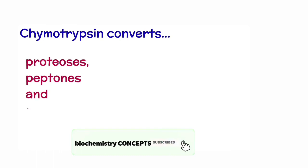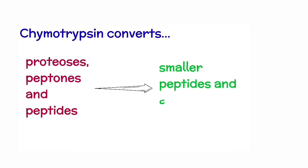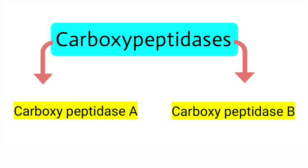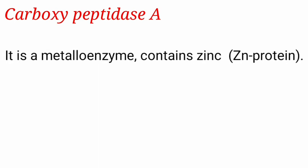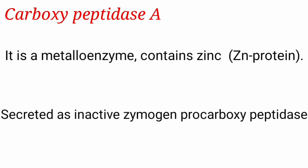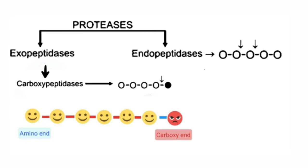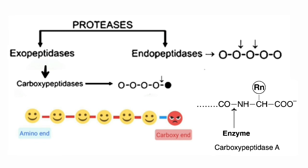Chymotrypsin converts proteoses, peptones, and peptides into smaller peptides and amino acids. There are two types of carboxypeptidases: carboxypeptidase A and B. Carboxypeptidase A is a metalloenzyme with zinc as the metal ion, secreted as the inactive zymogen pro-carboxypeptidase A. It is an exopeptidase that hydrolyzes the terminal peptide bond connected to an end amino acid with a free alpha carboxyl group, particularly if the end amino acid is tyrosine, phenylalanine, or tryptophan.